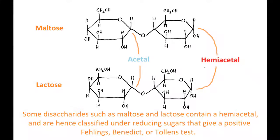The disaccharides lactose and maltose also belong to the class of reducing sugars because they contain a hemiacetal group whose open-chain form contains an aldehyde, which thus gives a positive Fehling's test.